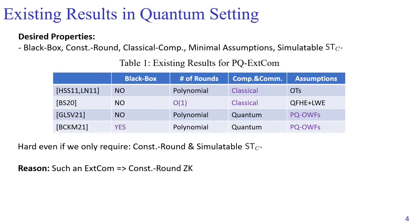Now let's look at the state-of-the-art results if we want all the properties mentioned earlier. Basically, there are four known constructions so far. Only the last construction makes black box use of the underlying primitive, and only the second construction manages to achieve constant rounds. In this column, I also show if these constructions require quantum power for communication and computation.